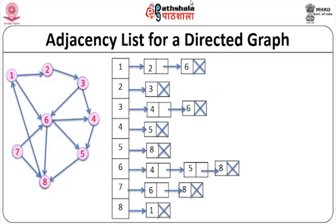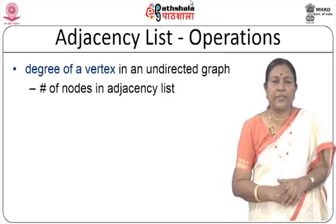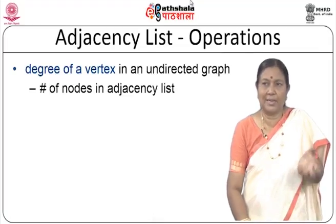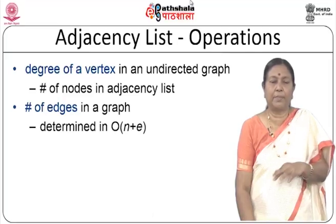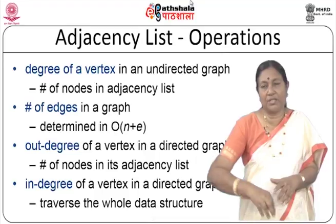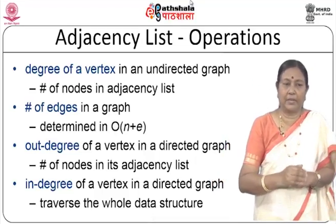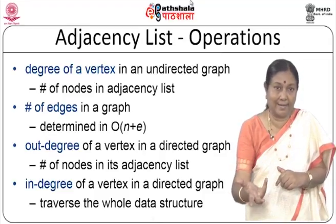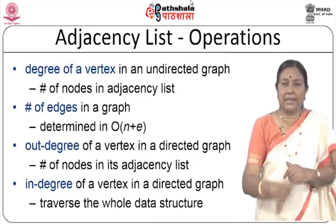For a directed graph adjacency list: node 1 connects to 2 and 6; node 2 connects to only 3; node 3 connects to 4 and 6; node 4 connects to 5; node 5 connects to 8; node 6 connects to 4, 5, and 8; node 7 connects to 6 and 8; node 8 connects to 1. The degree of a vertex in an undirected graph is the number of nodes in each adjacency list. The out-degree of a vertex in a directed graph is the number of nodes in its adjacency list, but in-degree is difficult to find without traversing the whole structure.